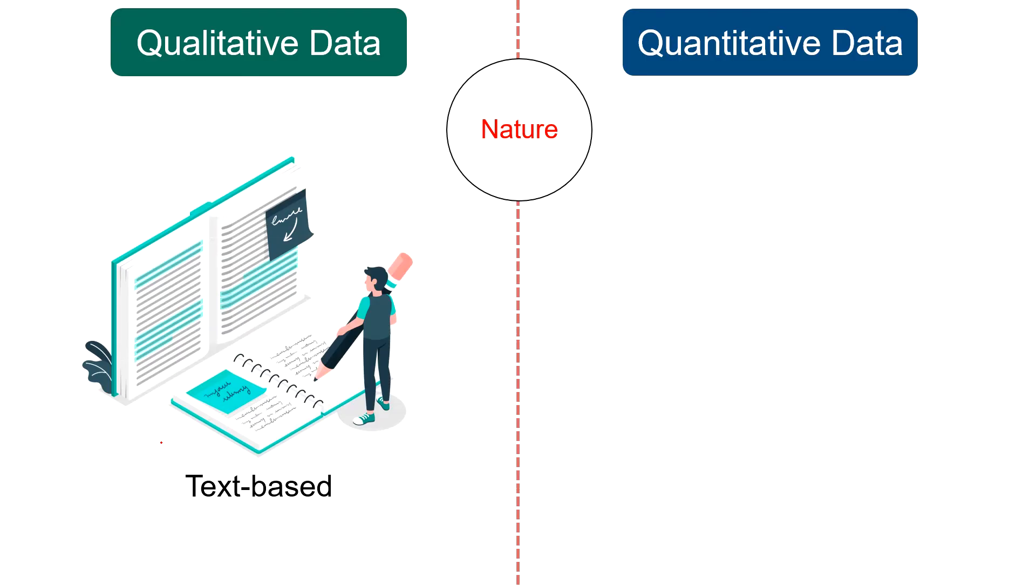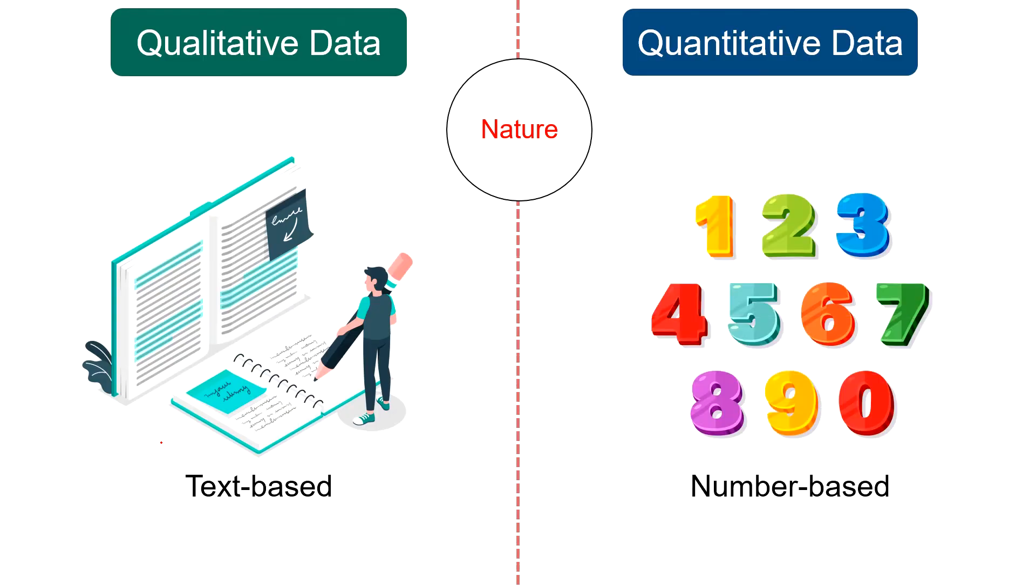Nature: Qualitative data is descriptive, that is it uses words and language. It is basically text-based. As against, quantitative data is countable or measurable, that is it is related to numbers. Hence it is number-based.